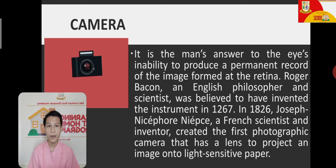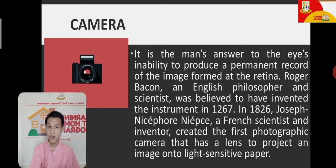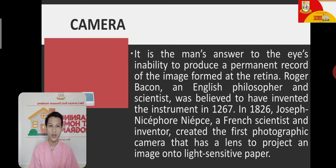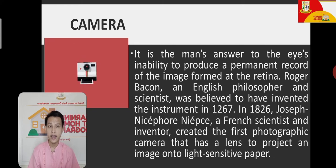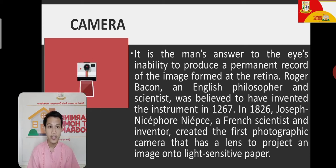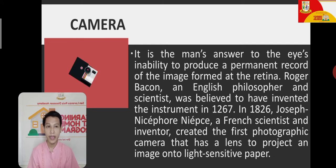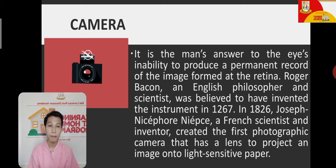In 1826, Joseph Nicéphore Niépce, a French scientist and inventor, created the first photographic camera that has a lens to project an image onto a light-sensitive paper. He built upon what Roger Bacon had done, adding a lens to the camera so it could store and project images onto light-sensitive paper.